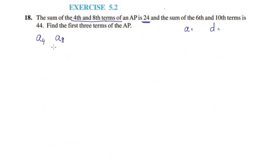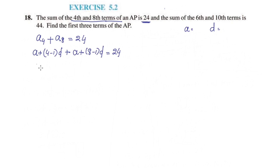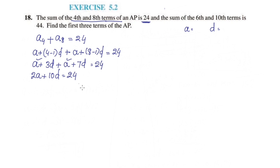The 8th term of an AP is a8. Using the formula a plus n minus 1 into d, we get: a4 plus a8 equals 24, which gives us 2a plus 10d is equal to 24. This is equation number 1.